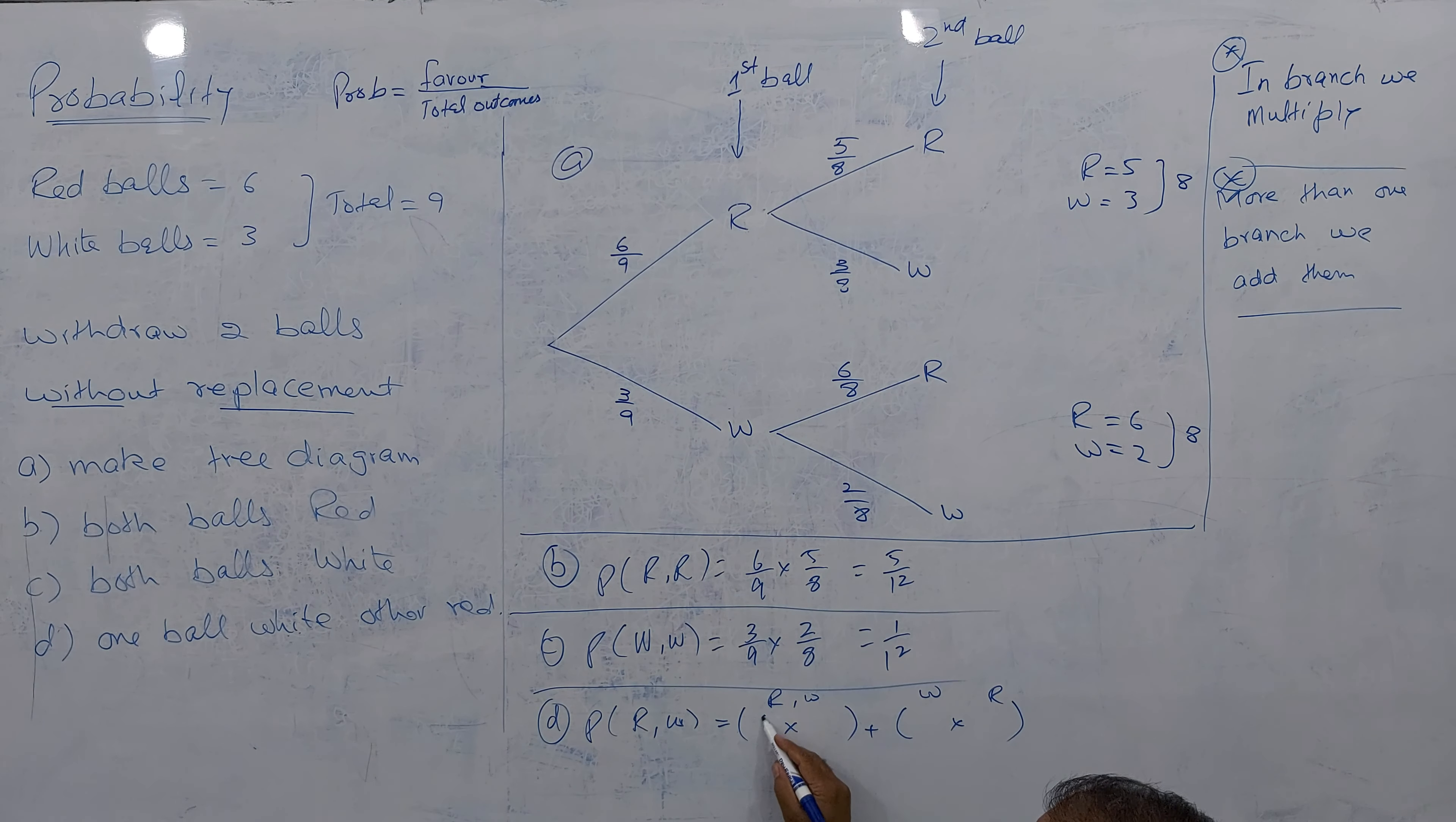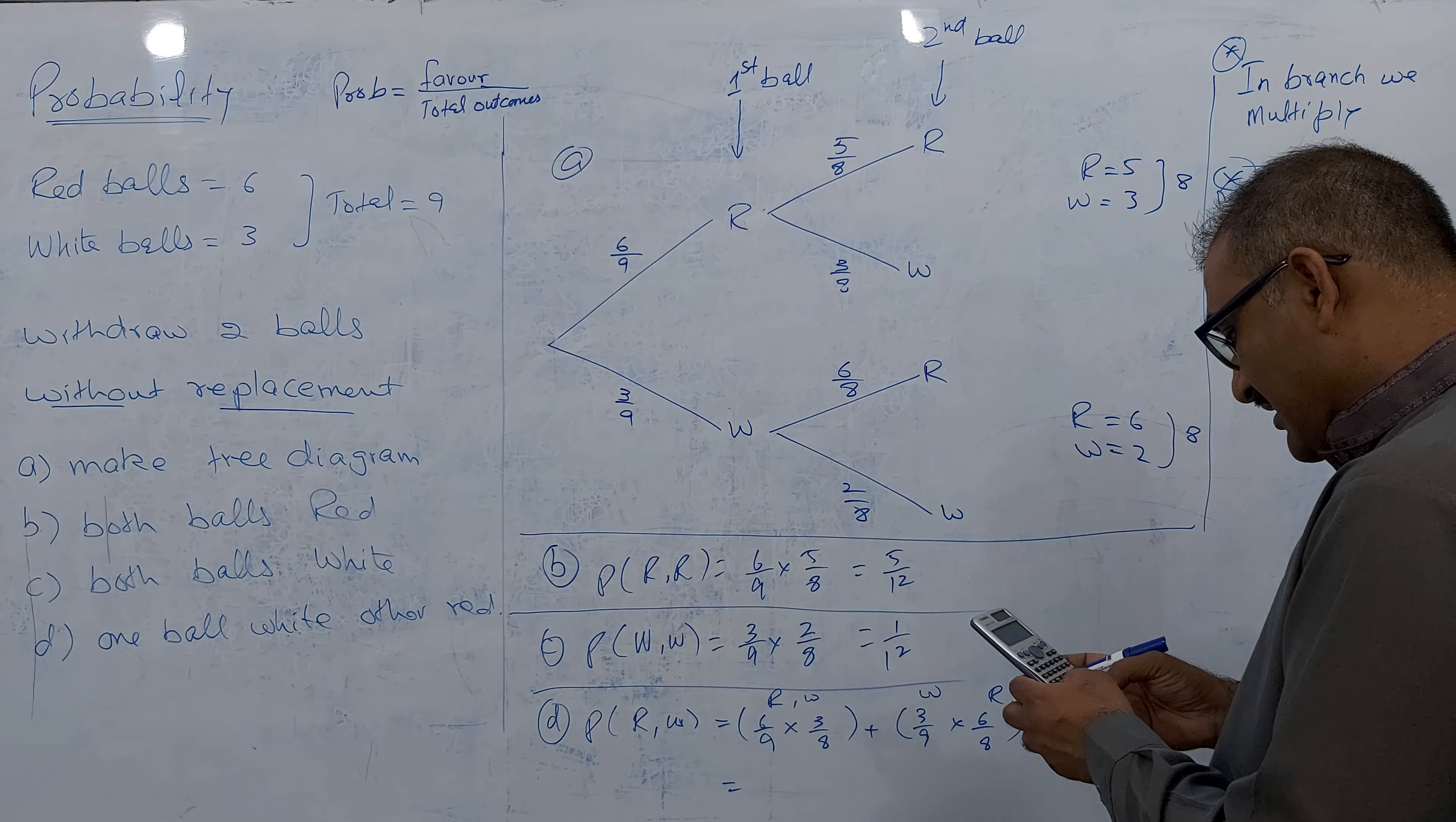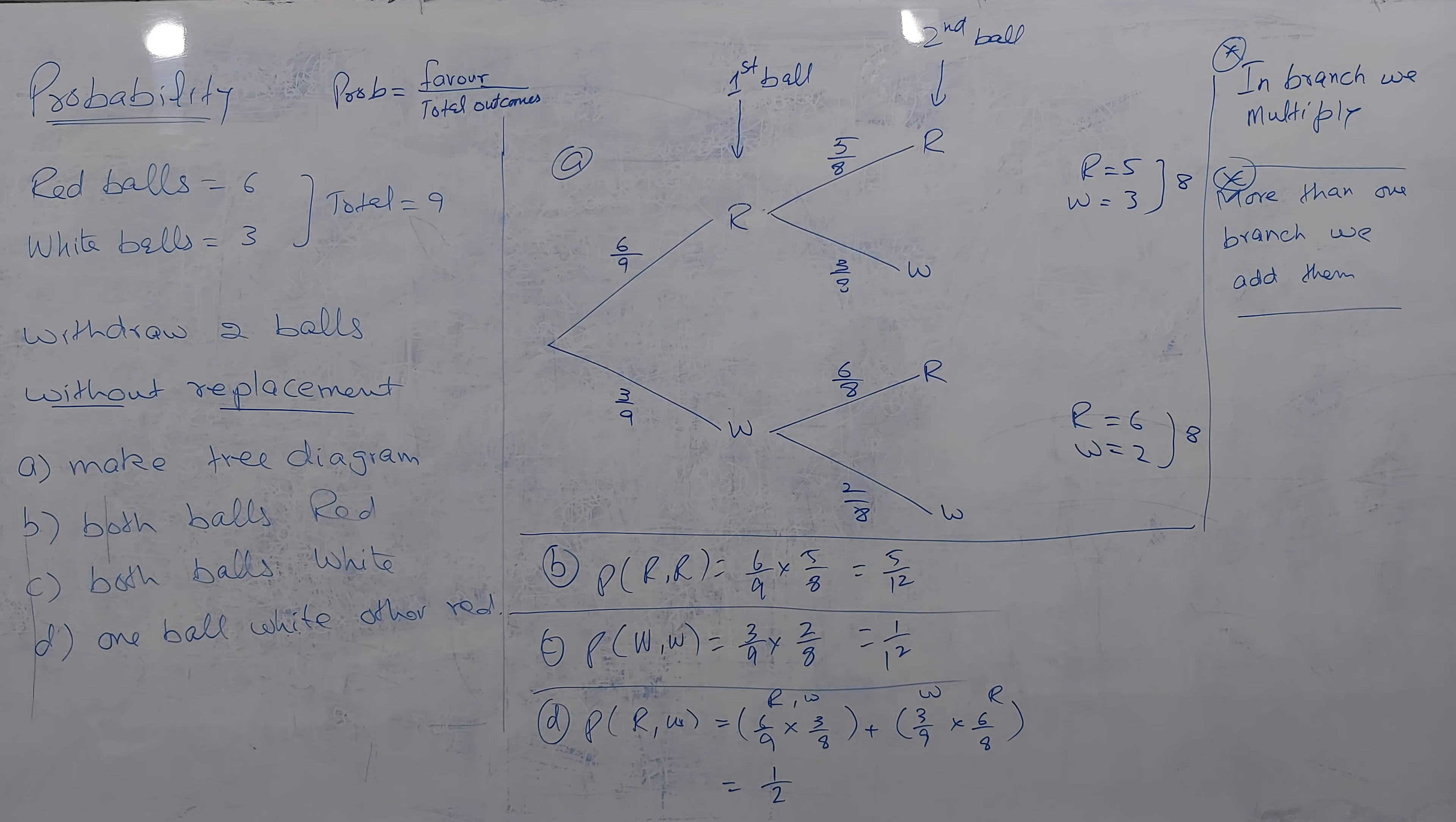Red and white: 6 by 9 into 3 by 8. Now 3 by 9 into 6 by 8. Let's see what answer comes. It comes 18 divided by 72. And in 2 we can say answer comes half. So half is the answer. This is enough. The question is over. And that's it.